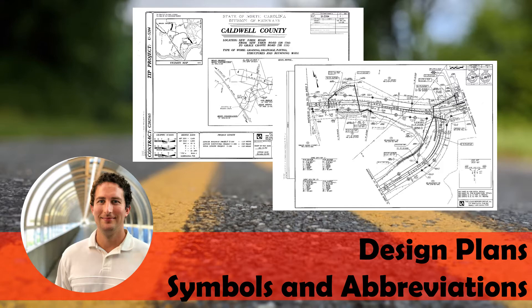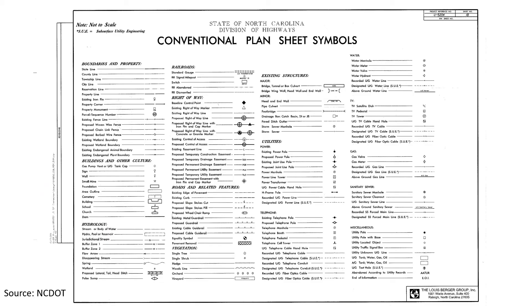So we'll take a look at an example here. This is the conventional plan sheet symbols and they're organized in a variety of areas: boundaries and property, buildings and culture, hydrology, railroads, right-of-way, roads and related features, vegetation, structures, and utilities.